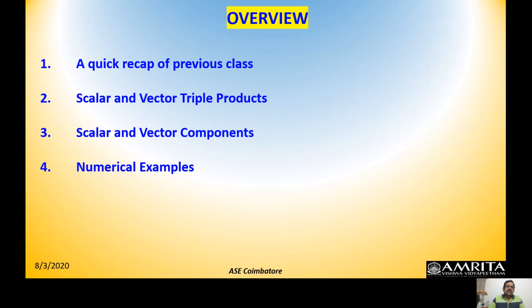Let us first deal with the scalar and vector triple product, following which we will go to scalar and vector components — how to represent a vector as a projection onto another vector. If it is a scalar component, the result has only a magnitude; if projected as a vector component, it retains a direction. The third part will be some numerical problems to reinforce our learning.